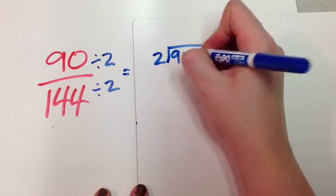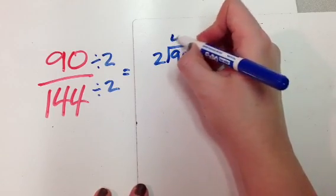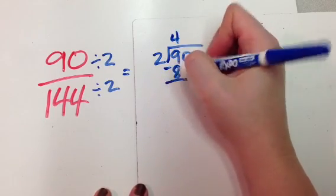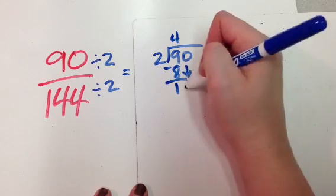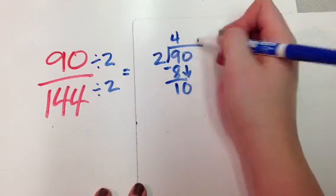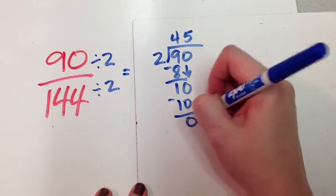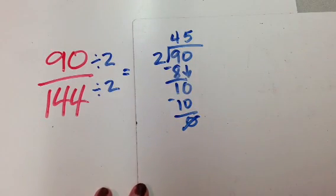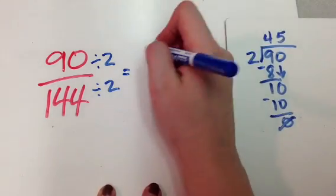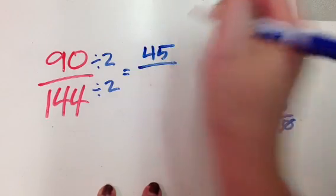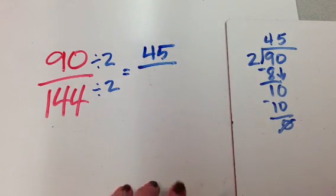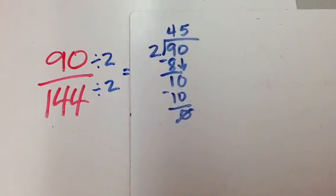Two into ninety. Two goes into nine four times, which is eight. I have one left over. Drop my zero down. Two into ten goes five times. Five times two is ten. And I have no remainder, which is good. It goes in evenly. So the new top of my fraction over here I've just found is forty-five.